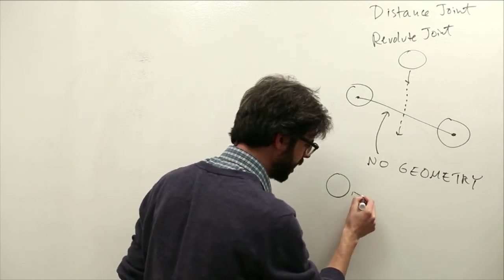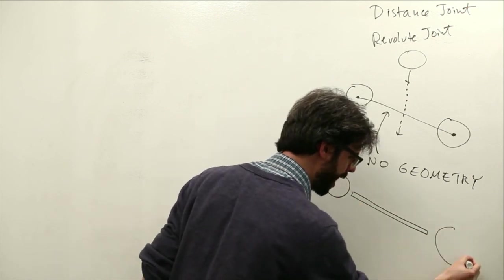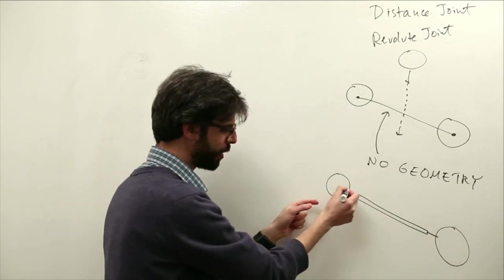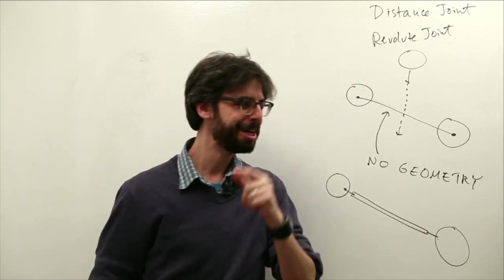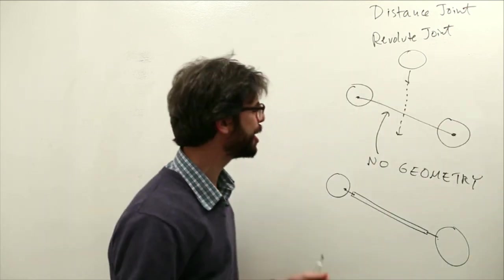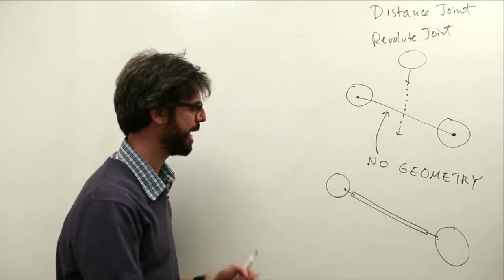One thing that you might think about doing is creating a body, a body, and a body and then putting the joints here so that this would be a connection between these two and this would be a connection between these two. That's a great exercise. When you finish this video and you look at the distance joint examples try to make this as your exercise and see how that works.